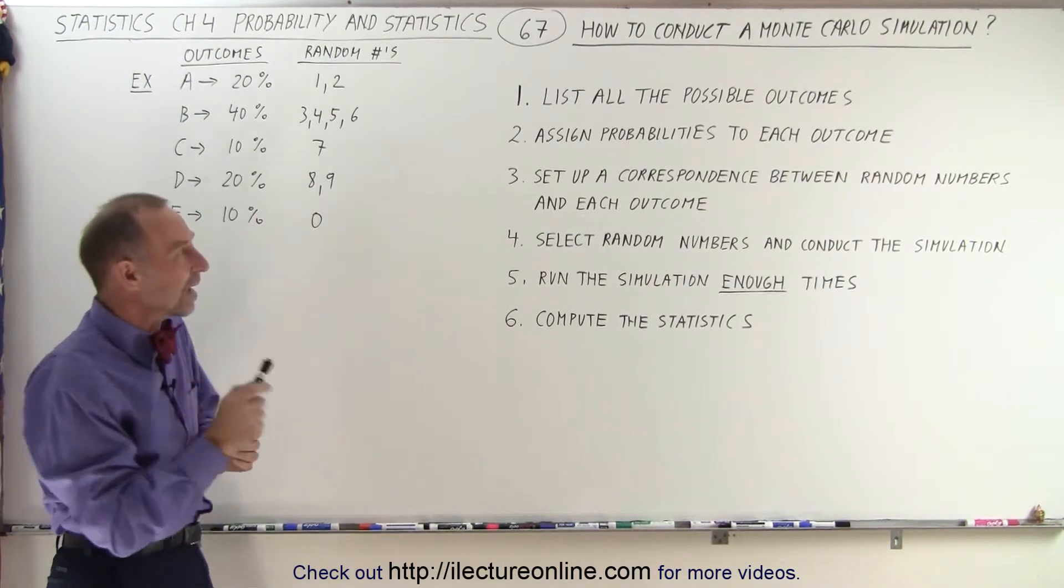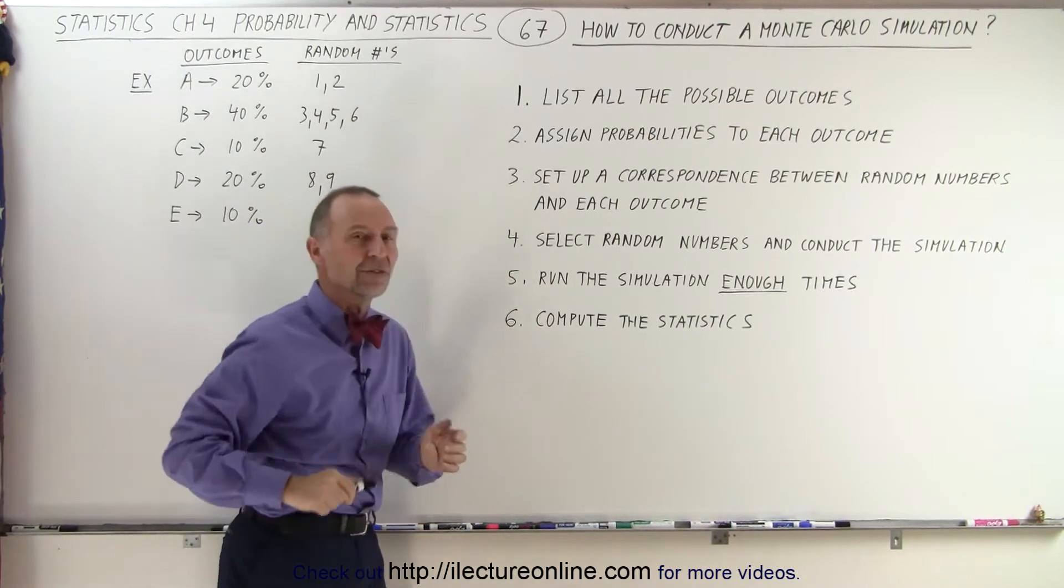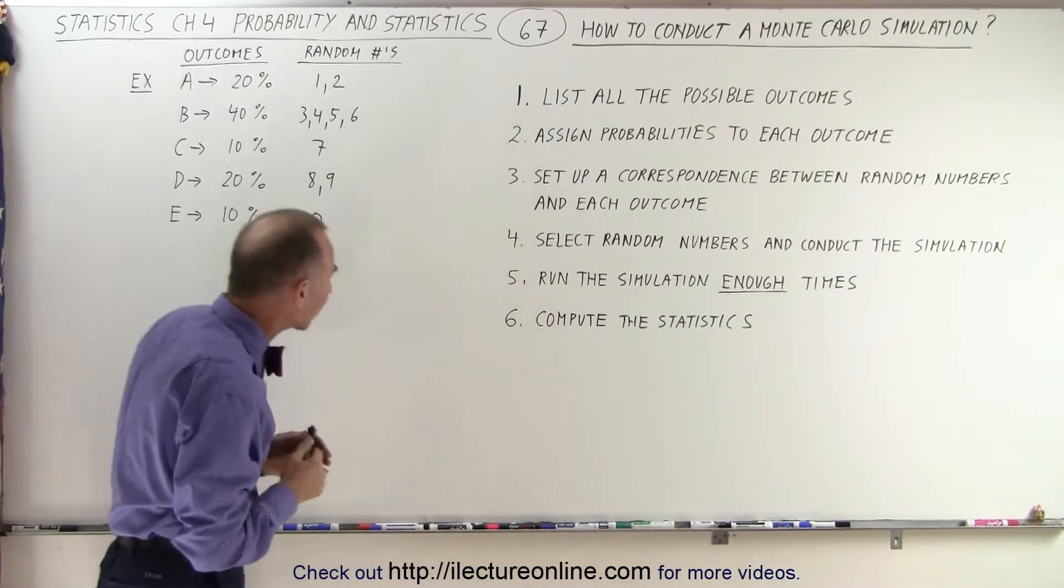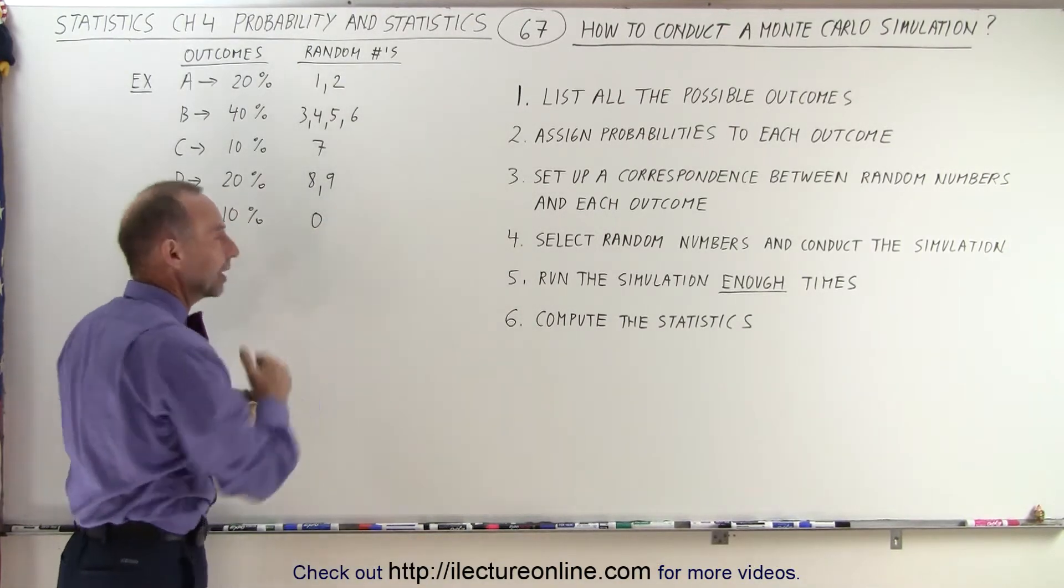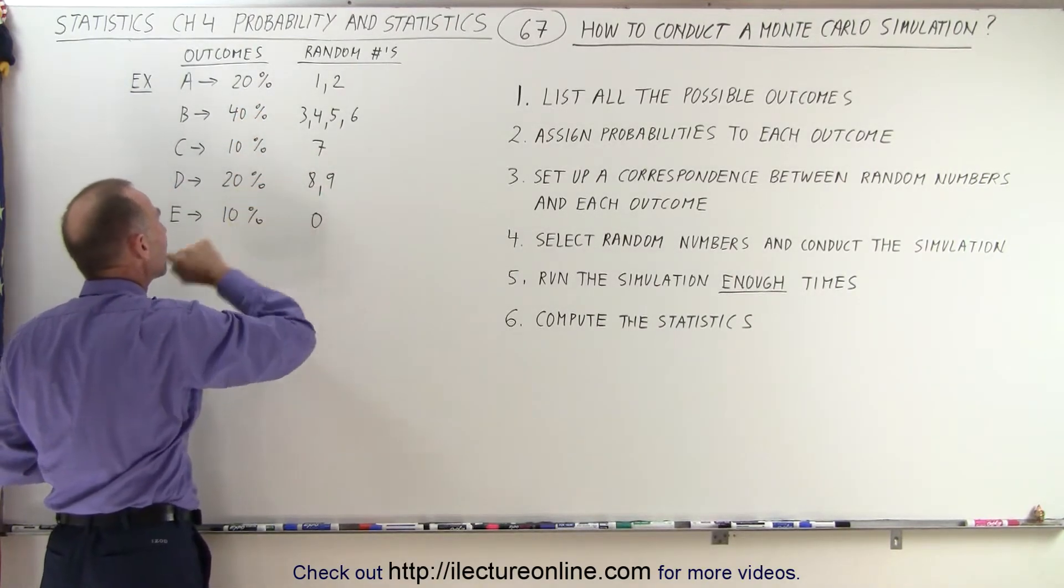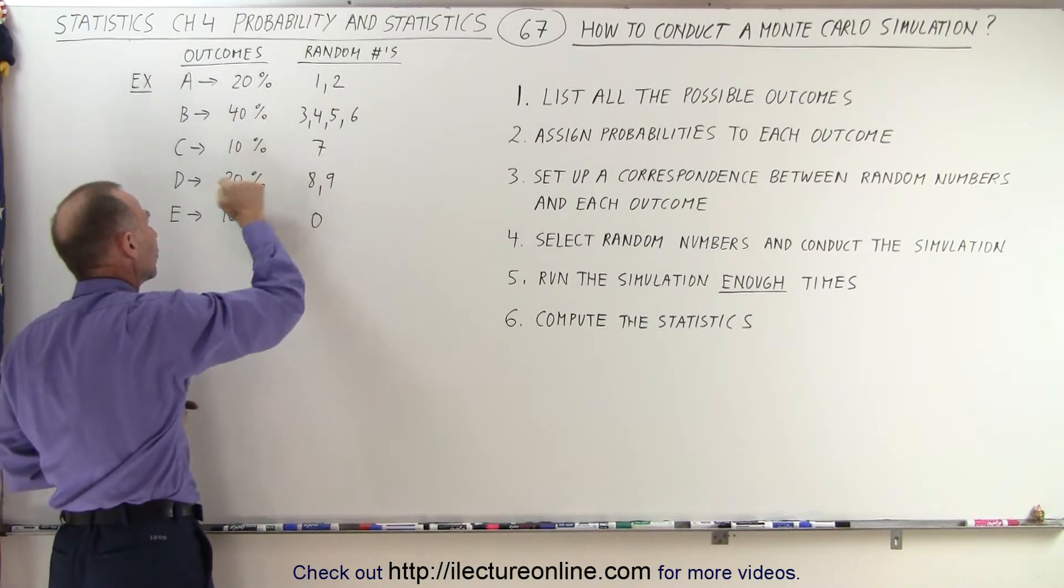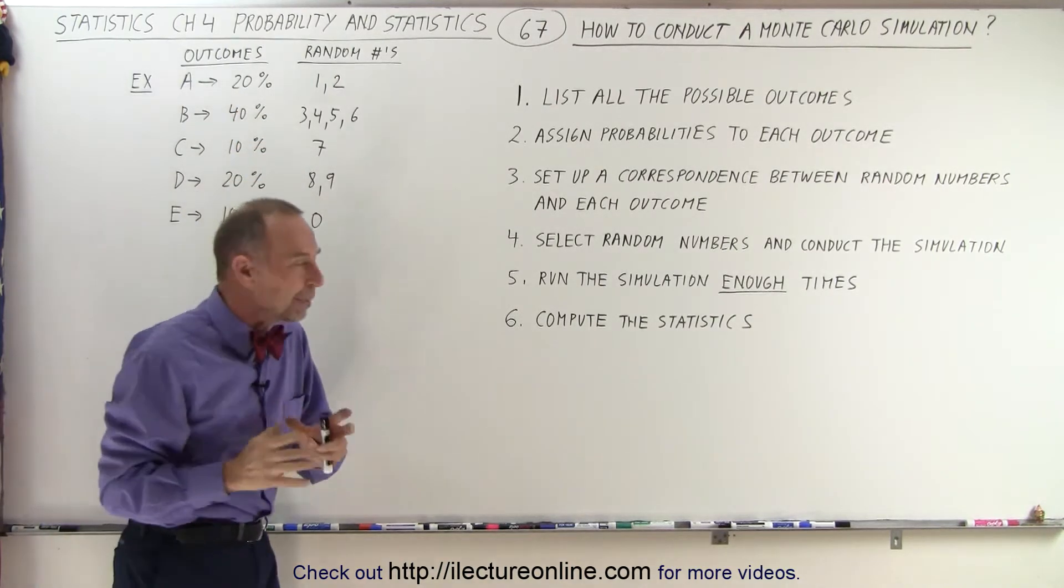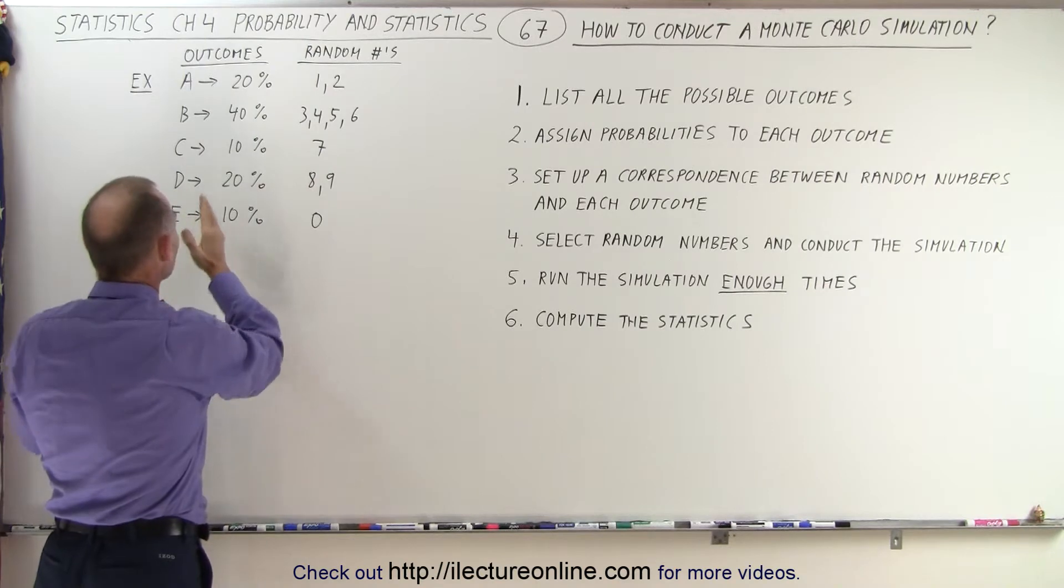Then we're supposed to assign probabilities to each of the outcomes. So we think about each of the outcomes. What's the probability of that particular outcome being the case? And so here let's say that we assign some probabilities: 20%, 40%, 10%, 20%, and 10% probability that one of these outcomes will occur.